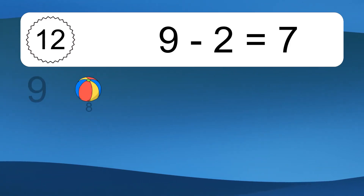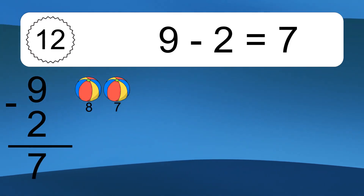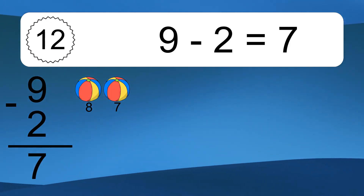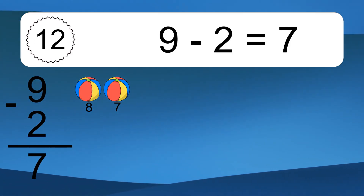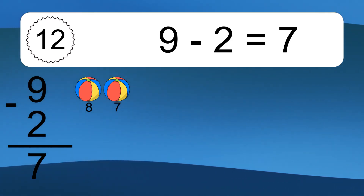9 minus 2 equals what? 9 minus 2 equals 7. Let's count it: 8, 7.